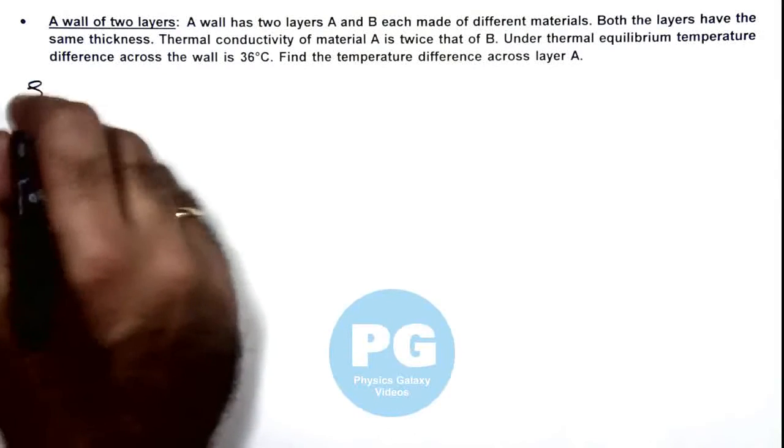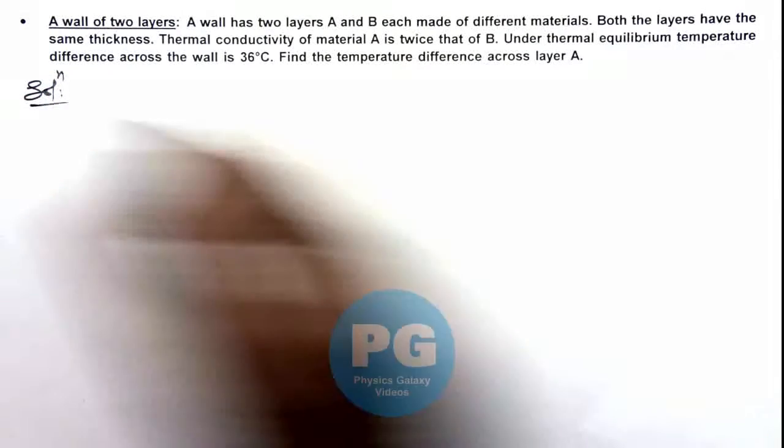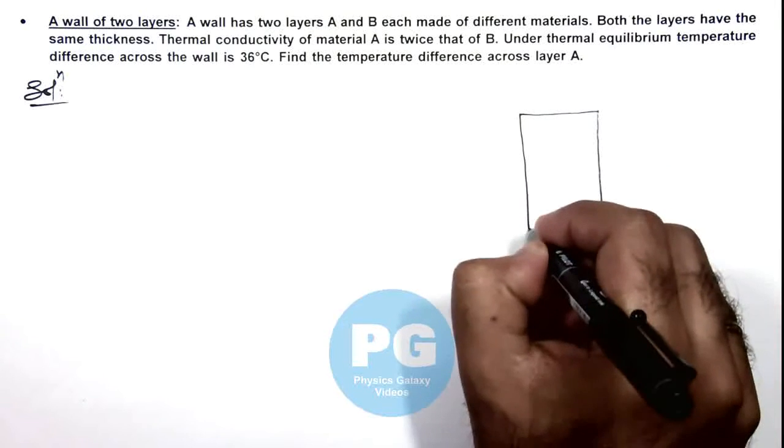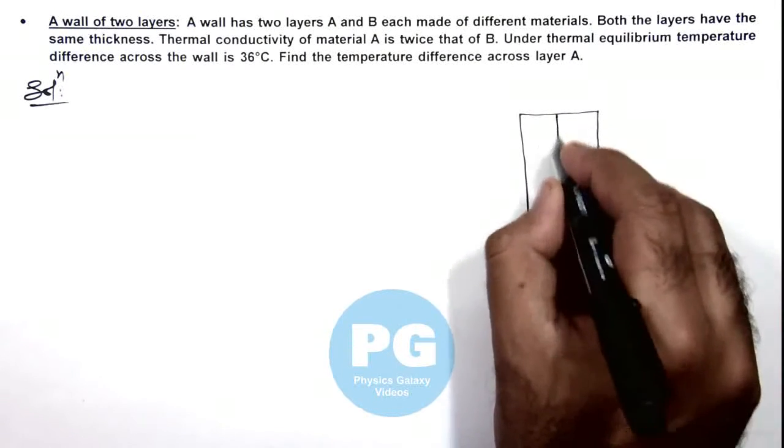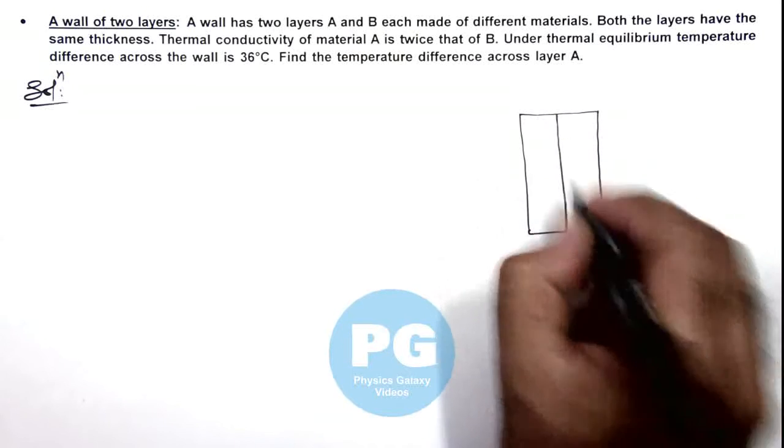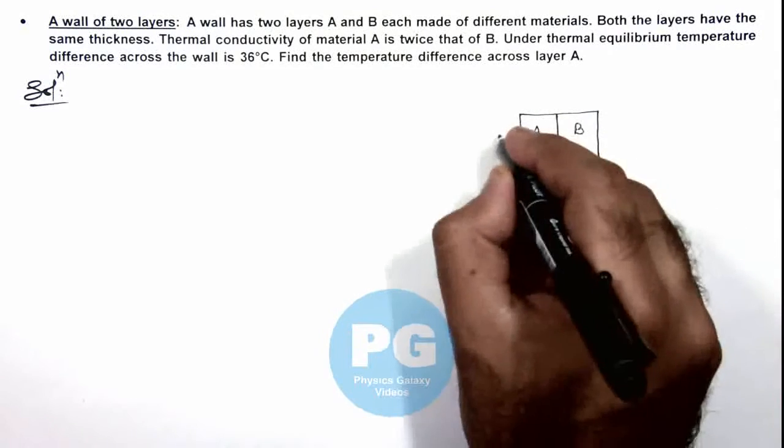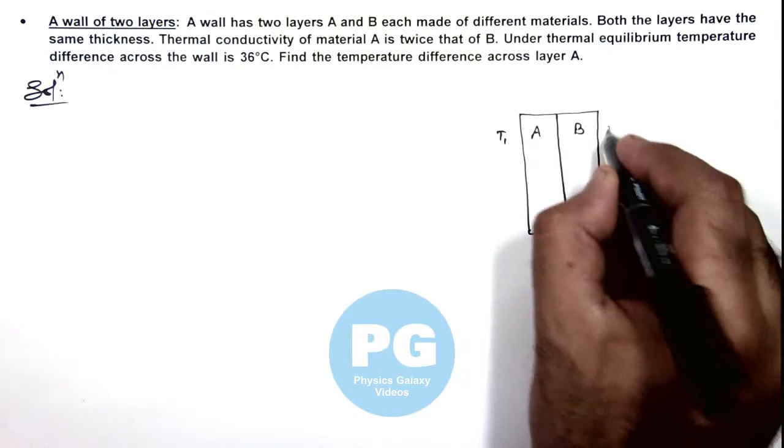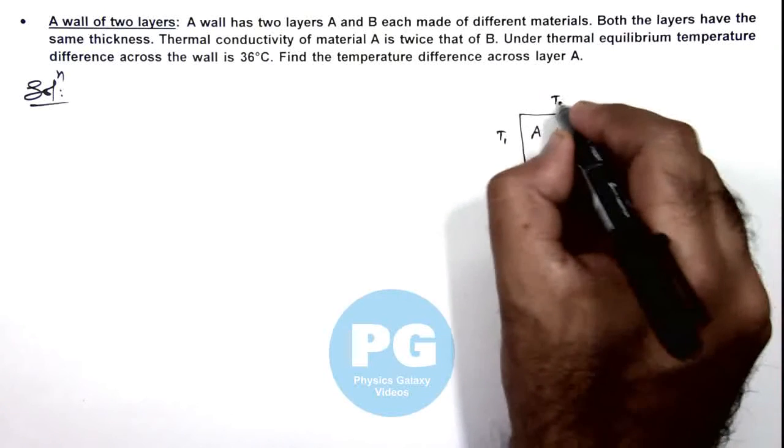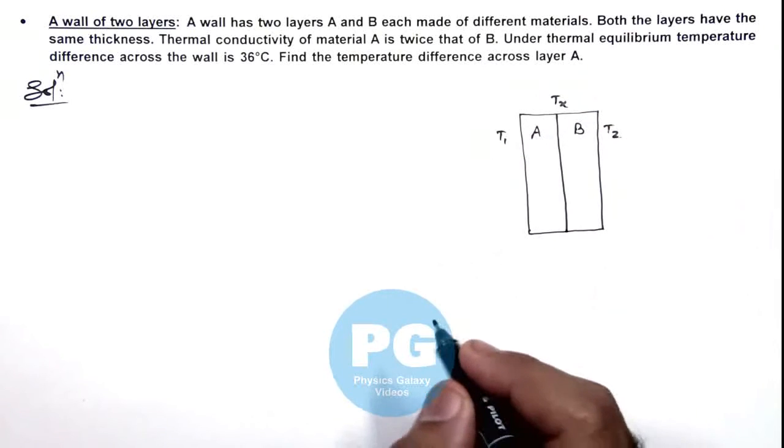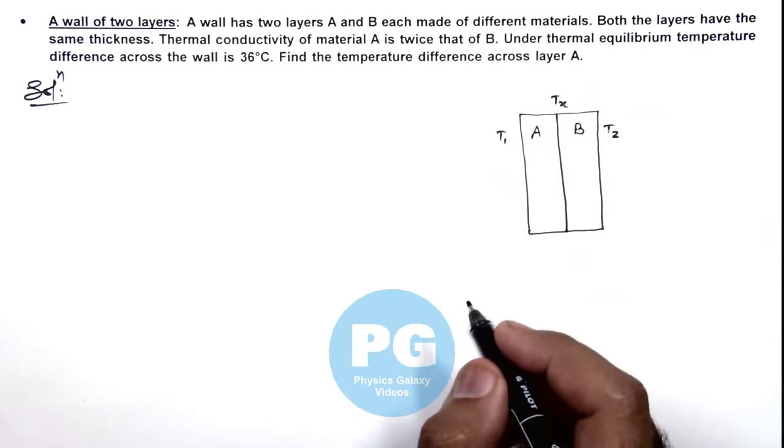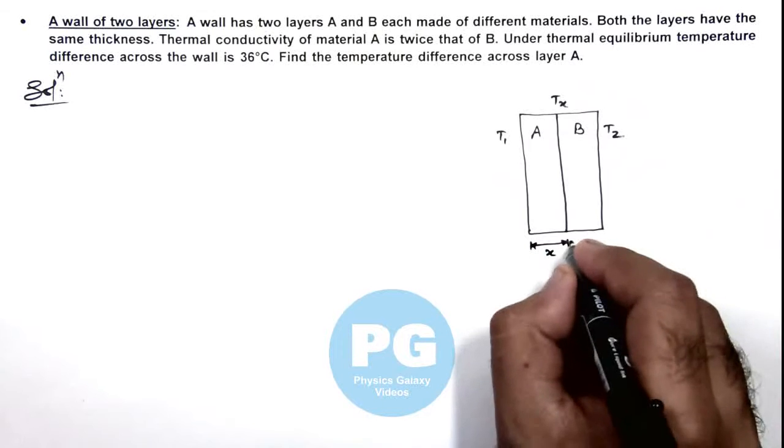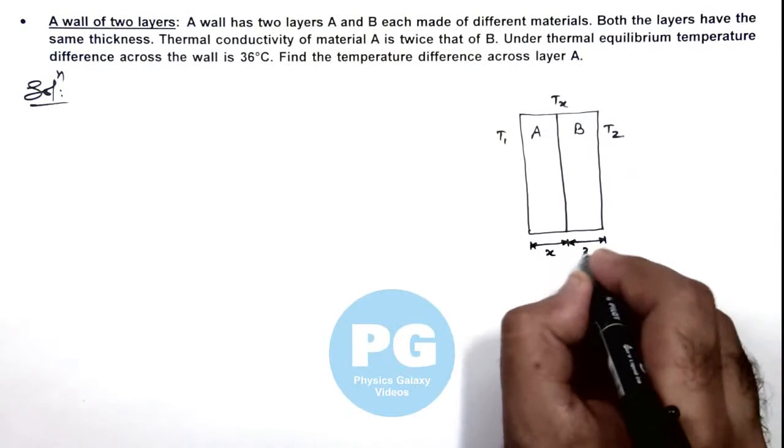To understand the situation better, we draw the picture. This is the cross section of a wall in which there are two layers, A and B. Across the wall, temperatures are considered as T1 and T2, and for the junction we consider the temperature to be Tx. Since these have the same thickness, we can consider the thickness of both walls to be equal to x.